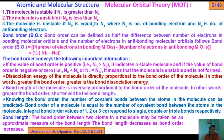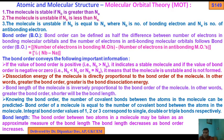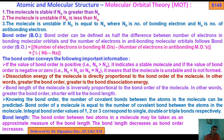The molecule is said to be stable when Nb is greater than Na, where Nb is the number of bonding electrons and Na is the number of anti-bonding electrons. The molecule is unstable when Nb is less than Na, and also unstable when Nb is equal to Na.